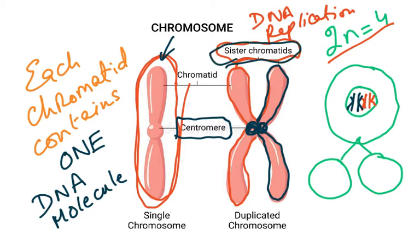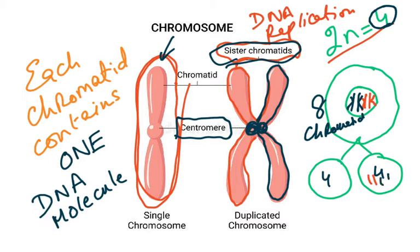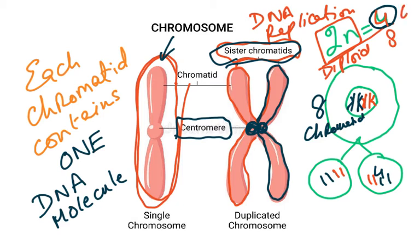After DNA replication, the four chromosomes become eight chromatids. When the cell divides there will be four in each daughter cell — two reds and two blacks — matching the original cell. Whatever the chromosome number (the diploid number), it is going to double. So if the diploid number is 46 it becomes 92, if it's 20 then DNA replication forms 40 chromatids.